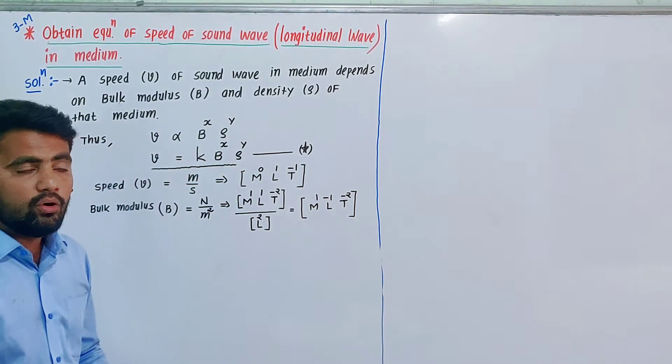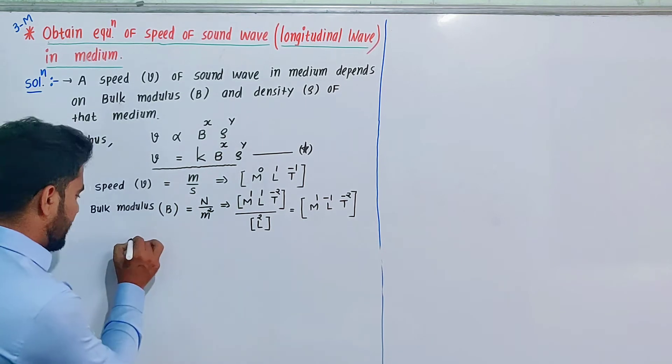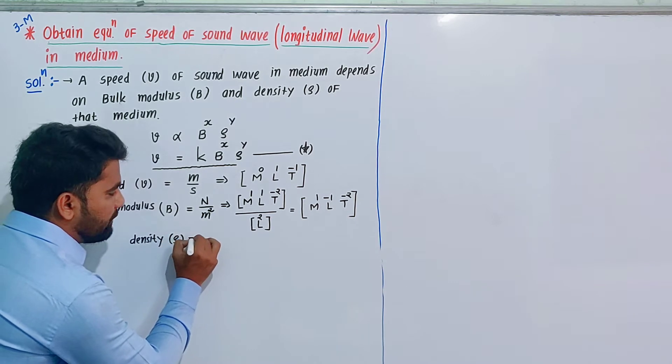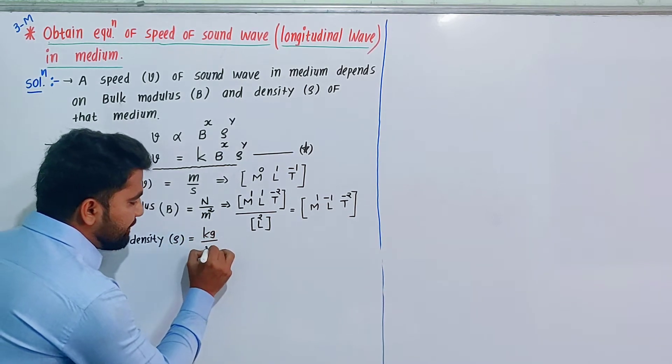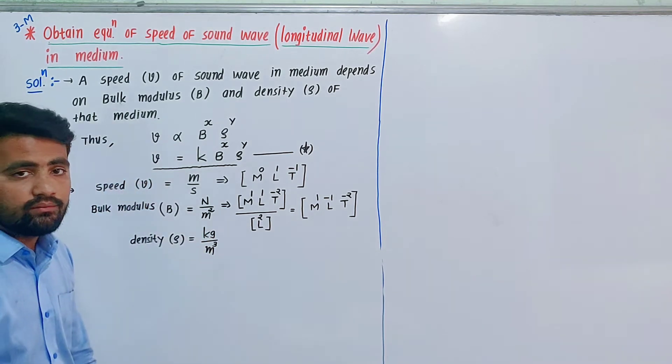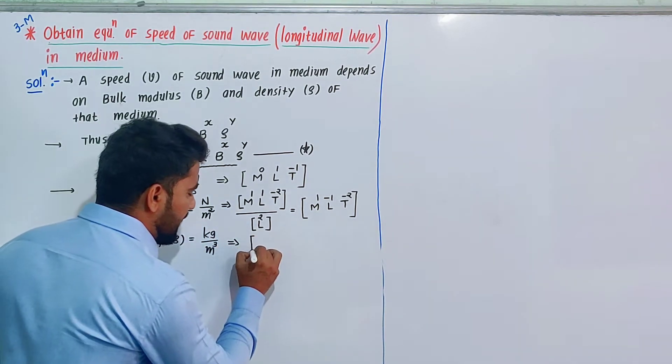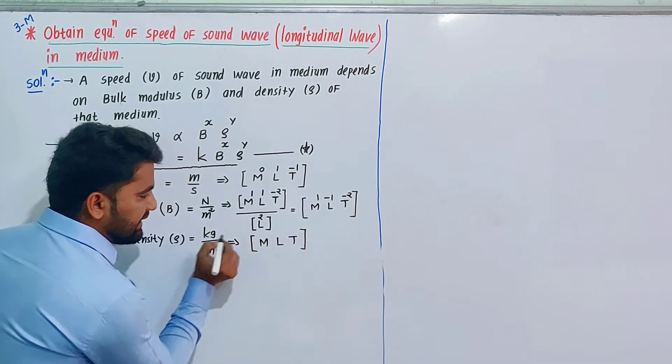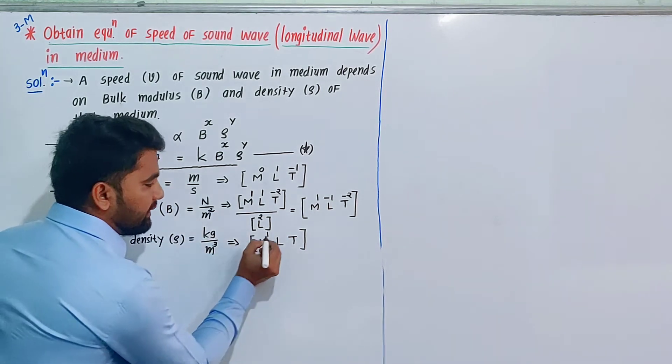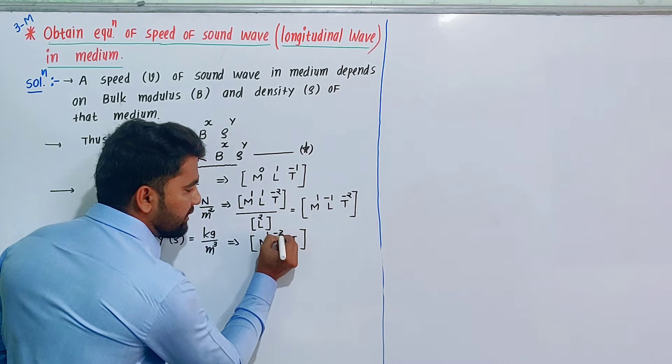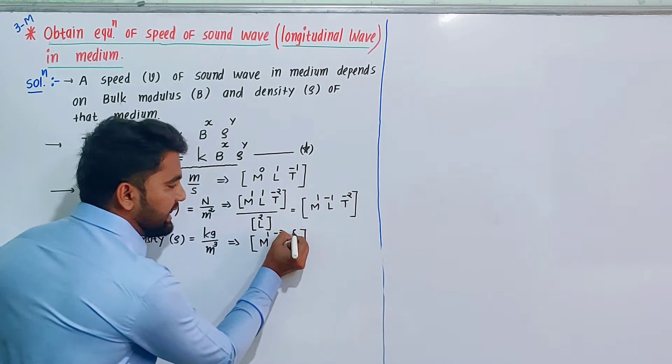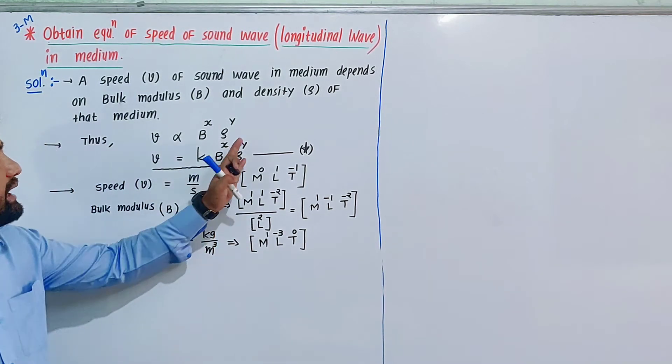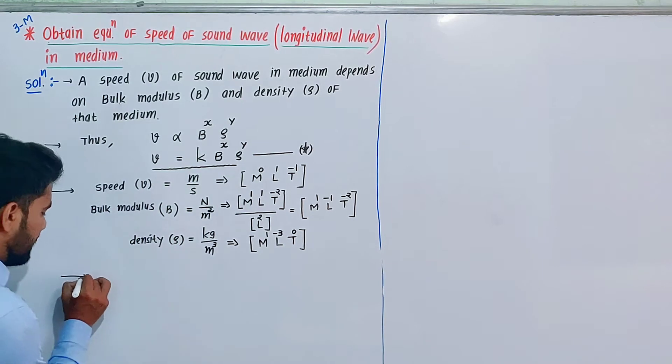Density ρ: mass upon volume, kg per meter cube. Dimensional formula MLT: mass M^1, meter cube is L^-3, and time T^0. We use these dimensional formulas in equation star.